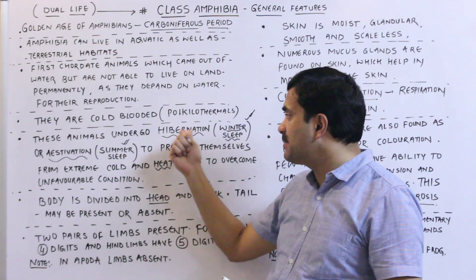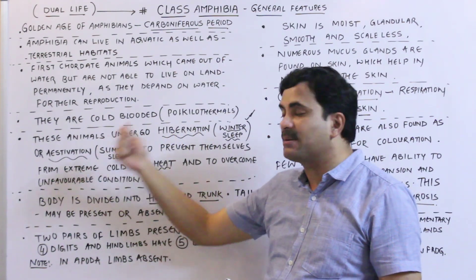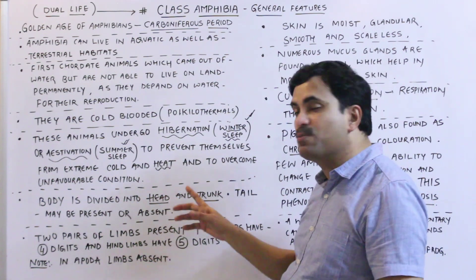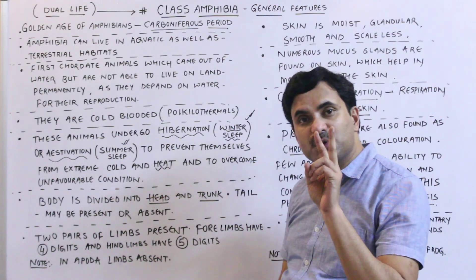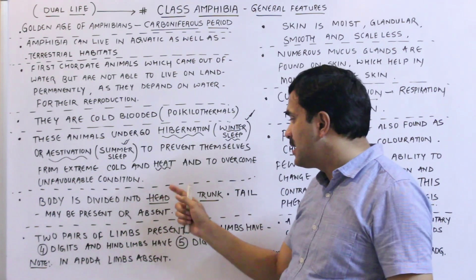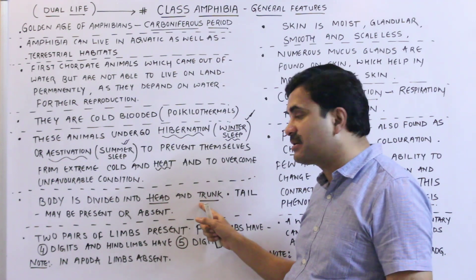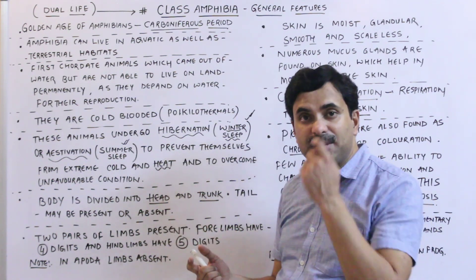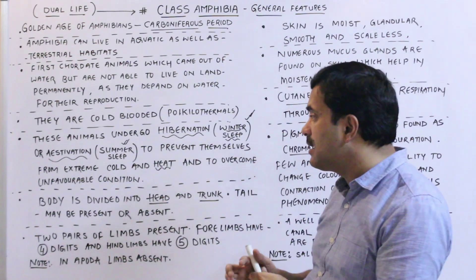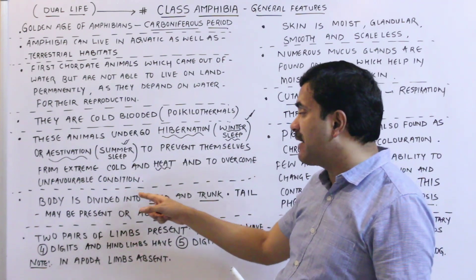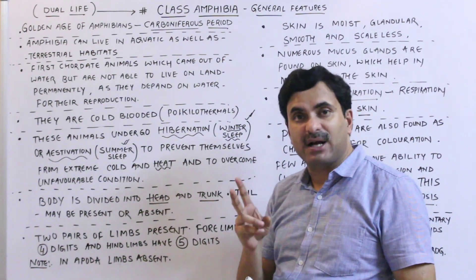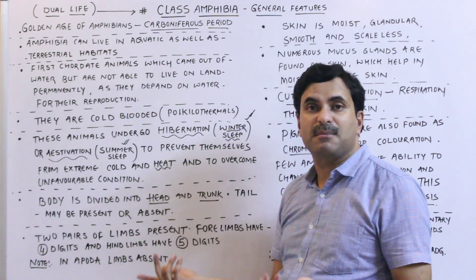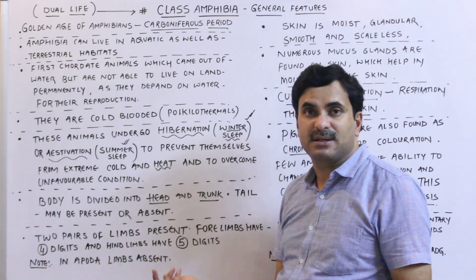That is why frogs are not seen in summers or winters; the croaking sound of frogs can be heard only in the rainy season when they come out. Winter sleep is called hibernation and summer sleep is called estivation. The body is divided into two parts: head and trunk; tail may be present or absent.